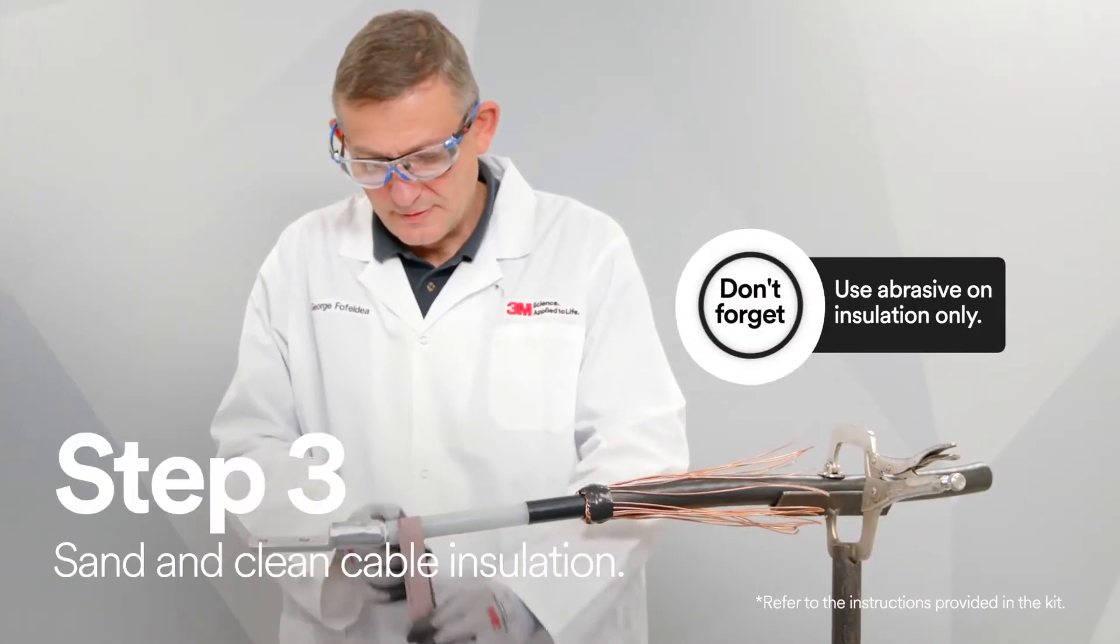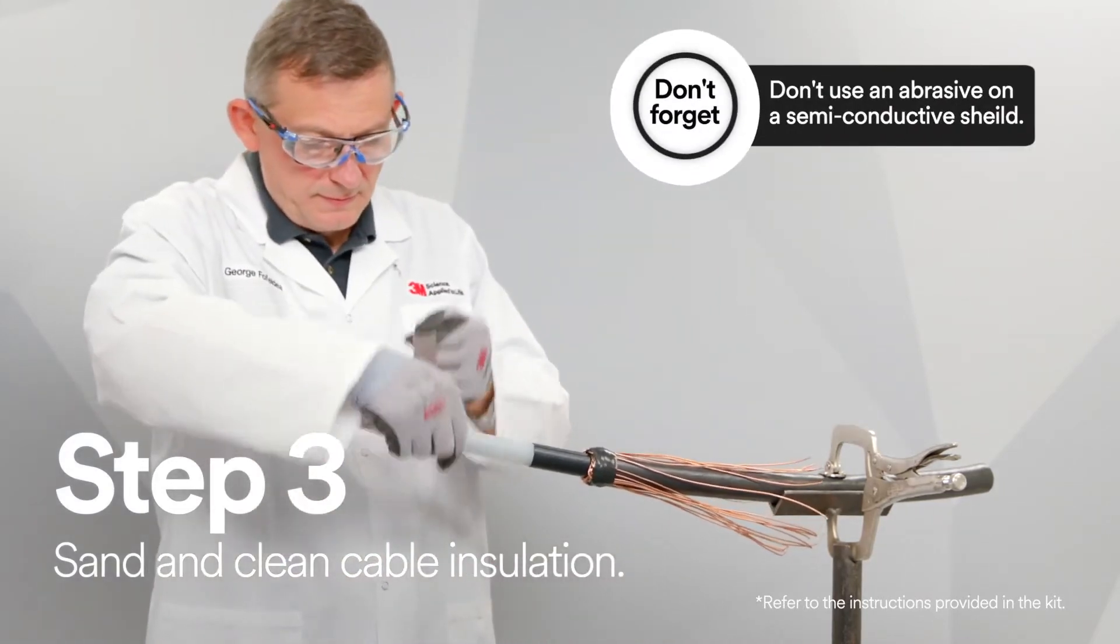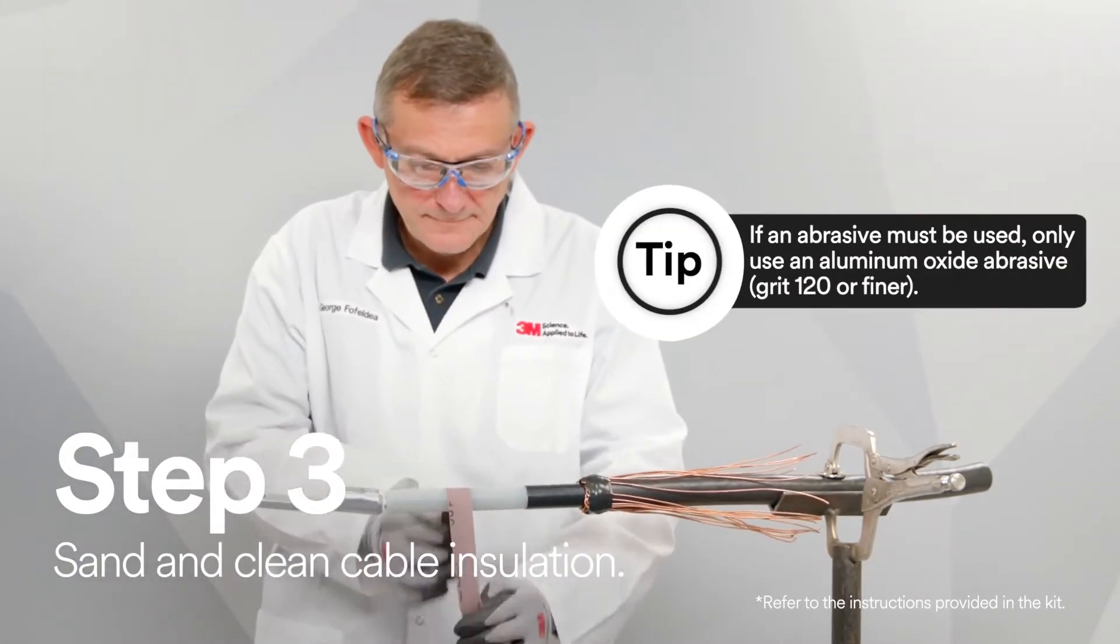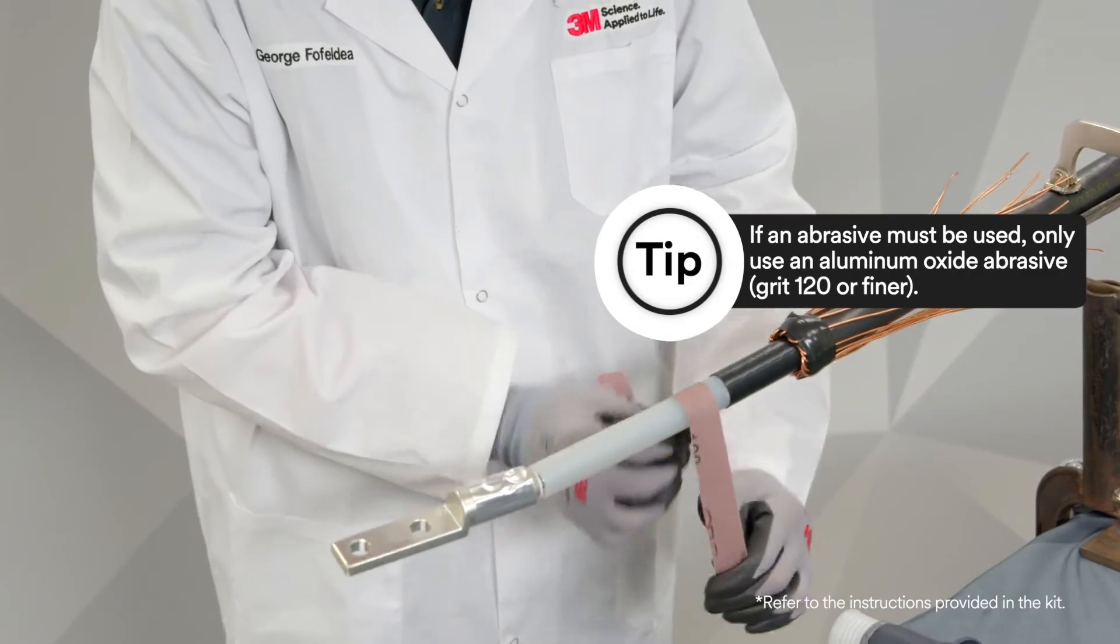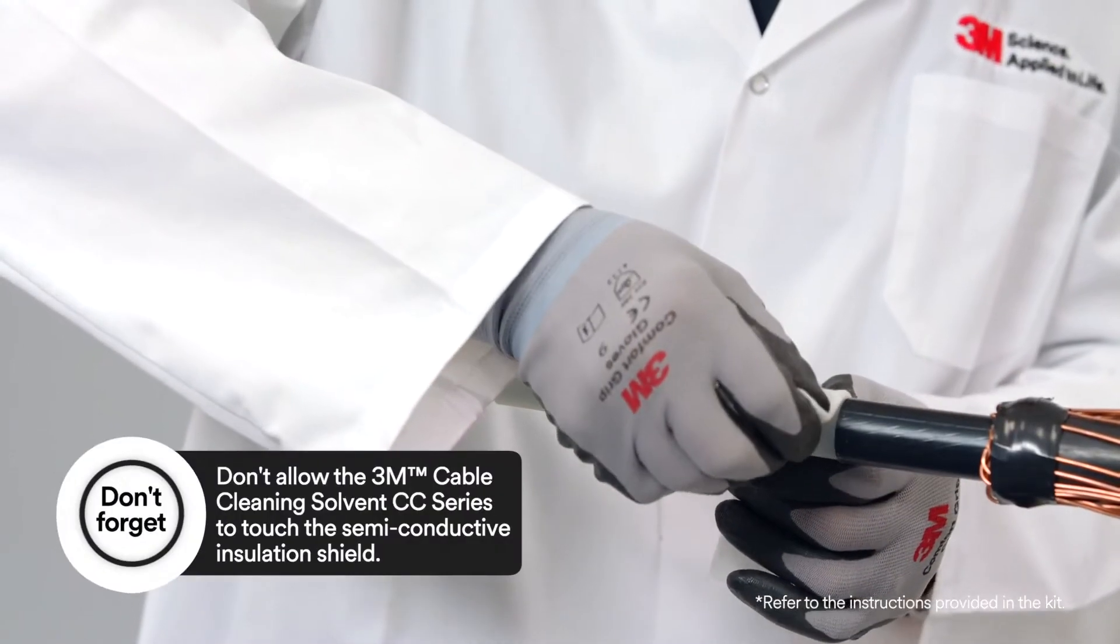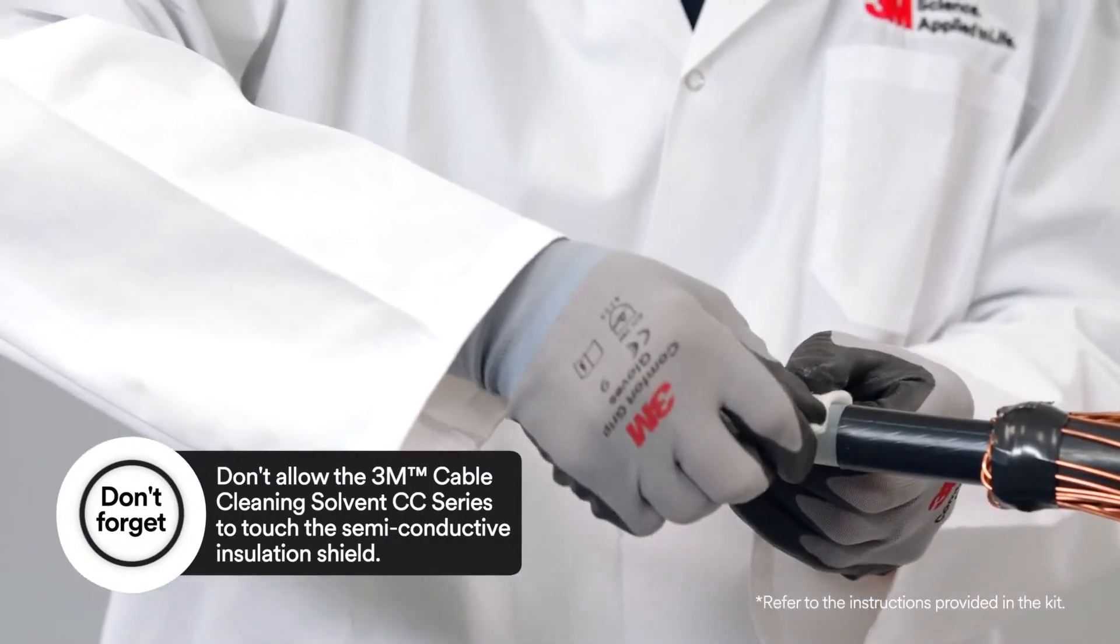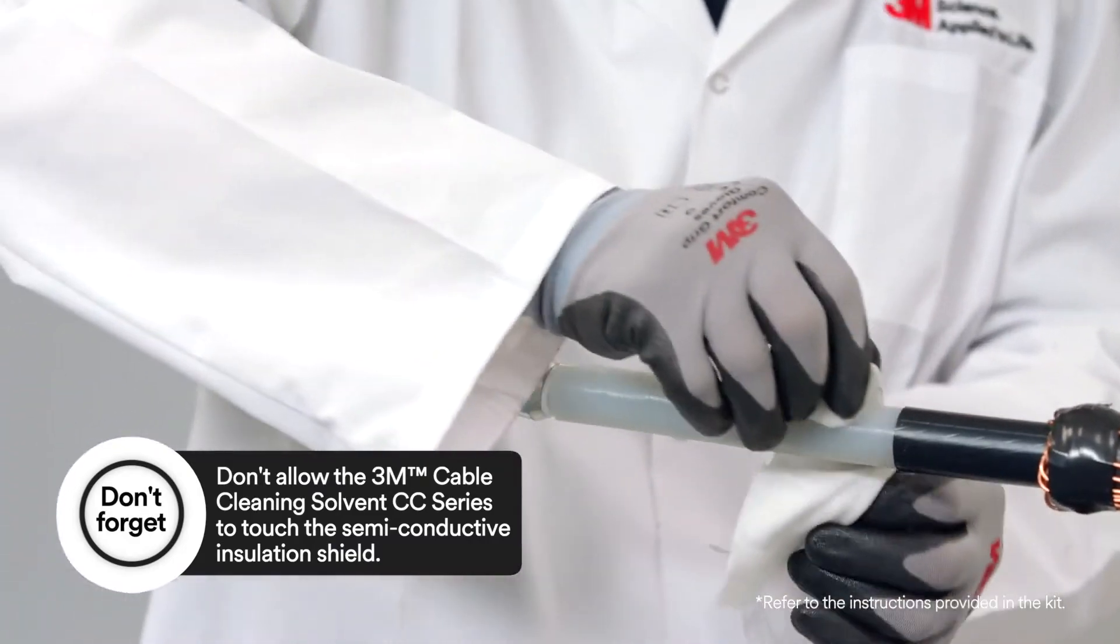After you've installed the lug, you must sand and clean the cable insulation using standard practice. Start by lightly sanding, then wiping the cable insulation with 3M Cable Cleaning Solvent CC series. Now you're ready to install the termination.